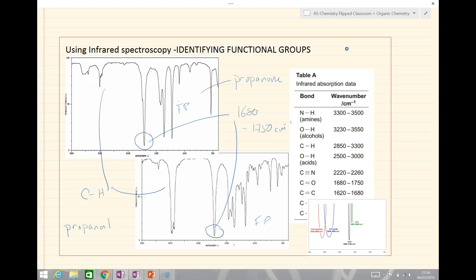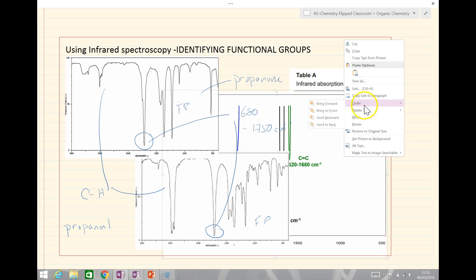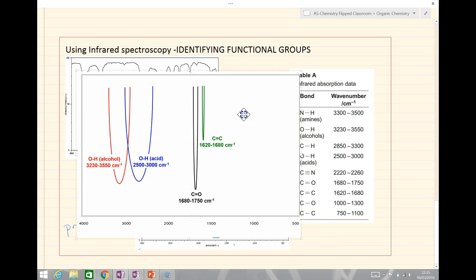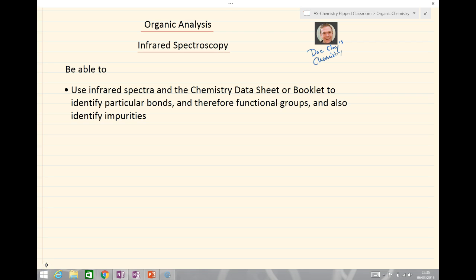That's the end of the session on infrared spectroscopy. The best thing to do is plenty of practice looking at these spectra and identifying those key functional groups. These really underpin all of the chemistry along with our functional group table and the absorption data you get in the exam. To recap, you should now be able to use infrared spectra and the chemistry data sheet to identify particular bonds and functional groups, and also identify impurities. Bye for now.